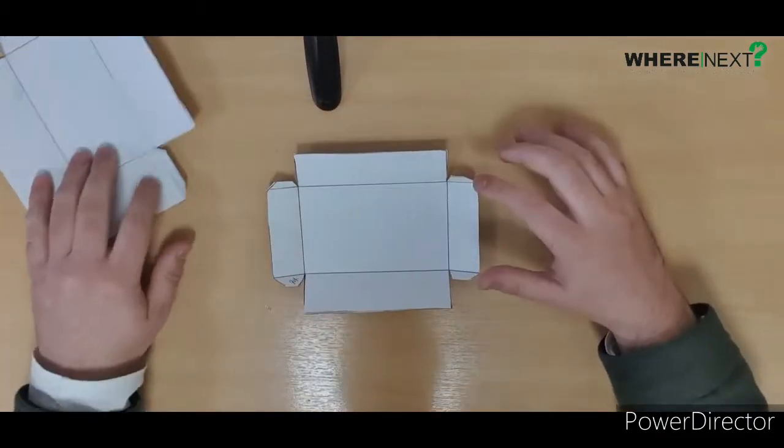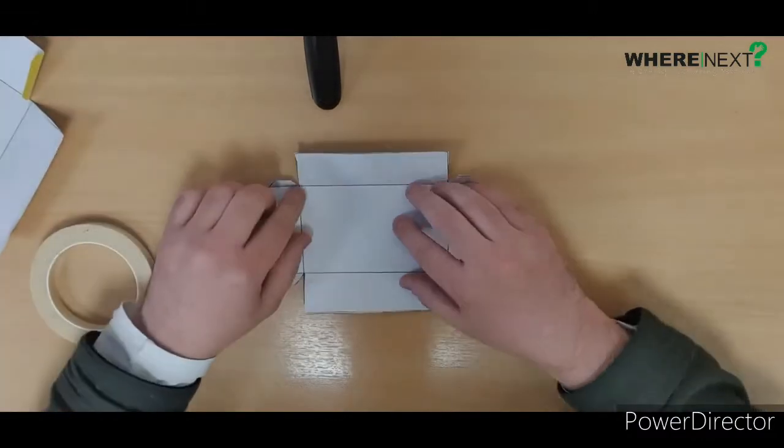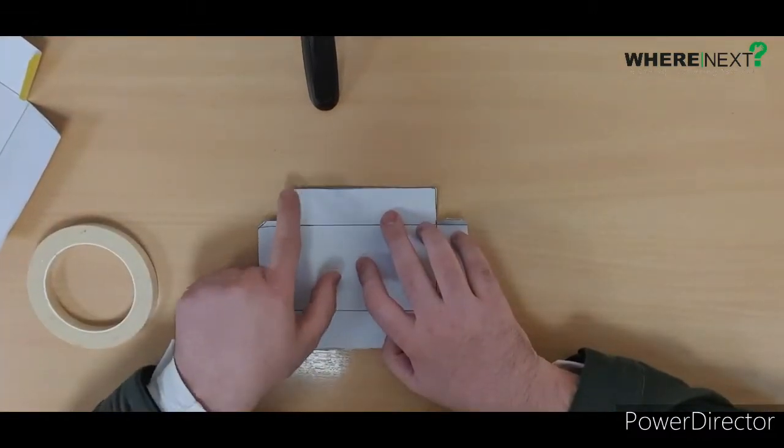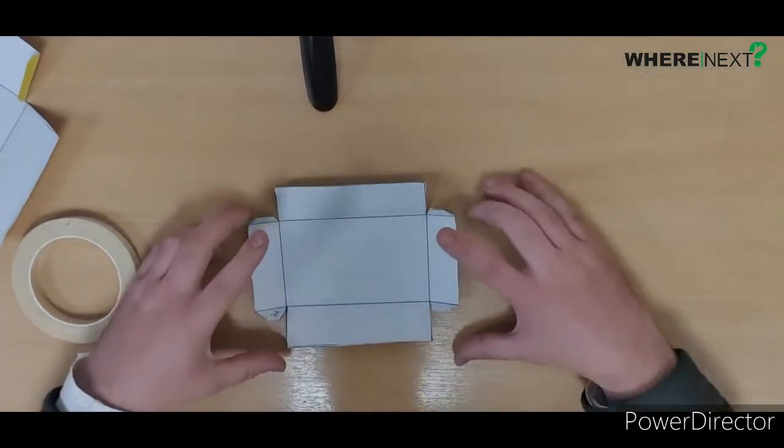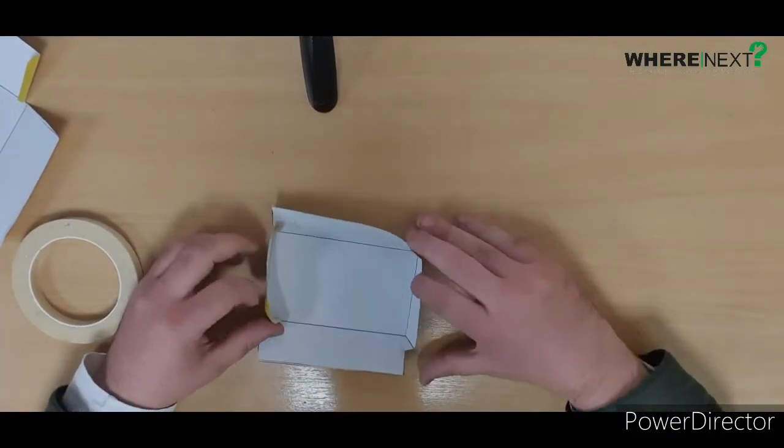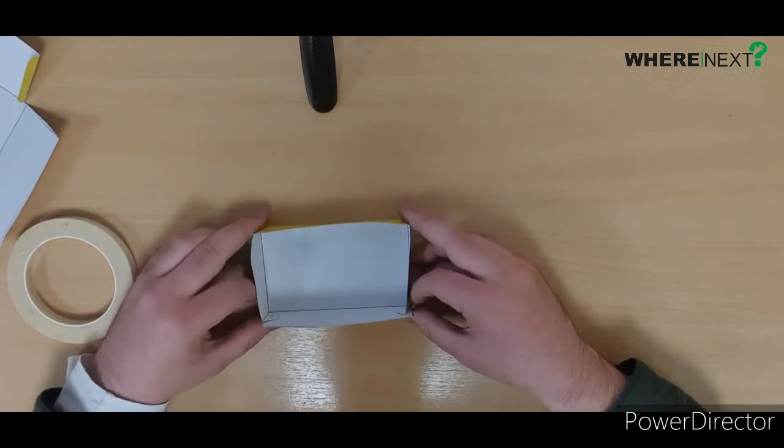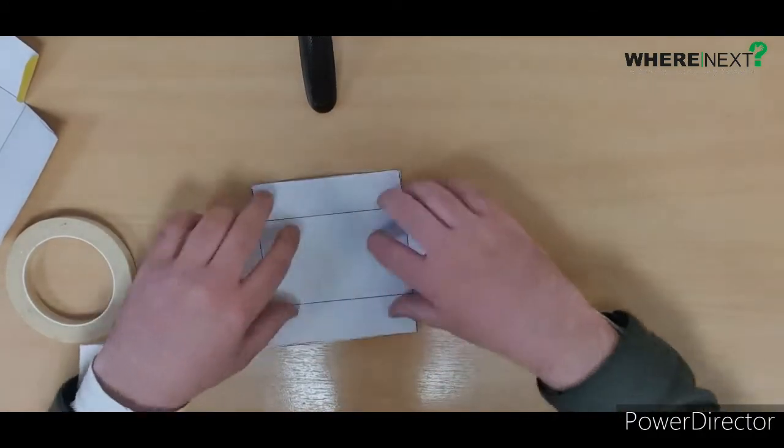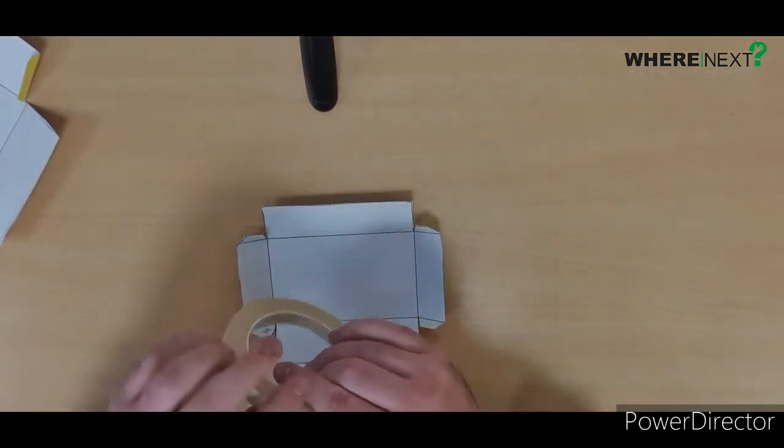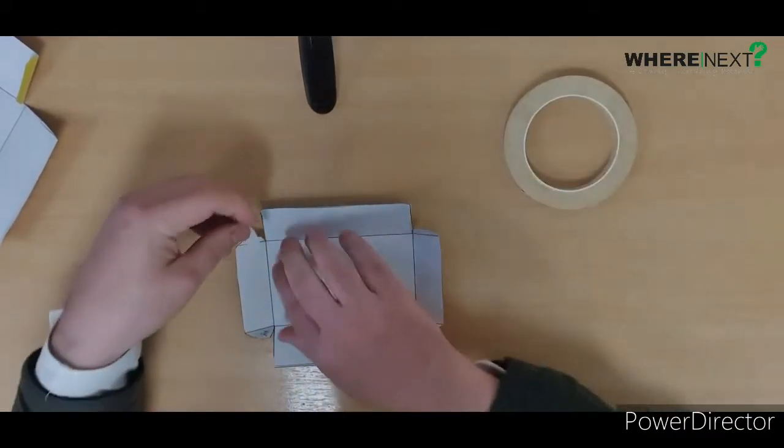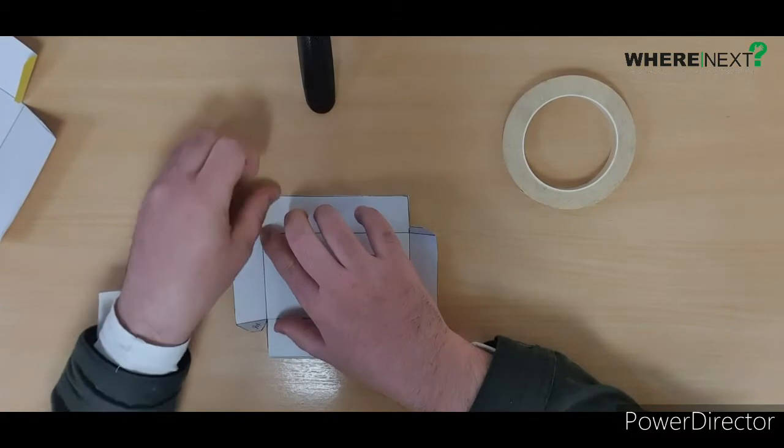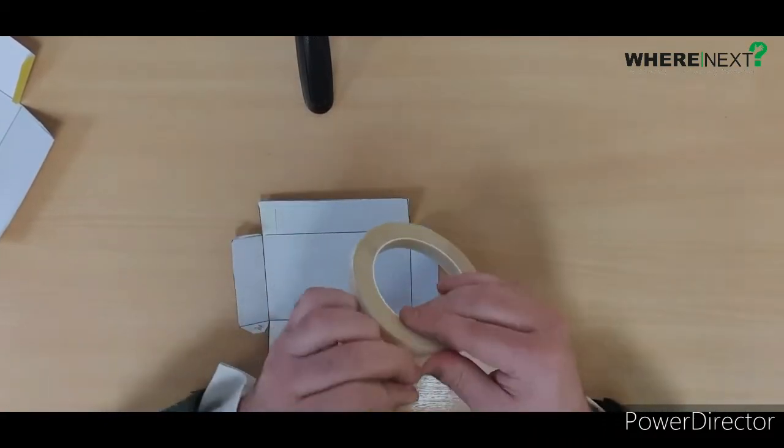It should be starting to come together, just not glued or stuck. If you're using glue, you just need to glue up this side here, up this side, this side, and up this side, then fold those bits in. But if you're using double-sided tape like me, get yourself a bit and just go from the top to the bottom on all four sides.